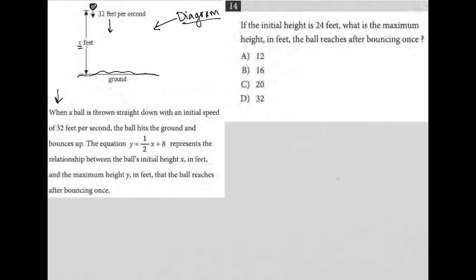The information provided here says when a ball is thrown straight down with an initial speed of 32 feet per second, the ball hits the ground and bounces up. The equation Y equals one-half X plus 8, and I always rewrite the equation that's provided to me.